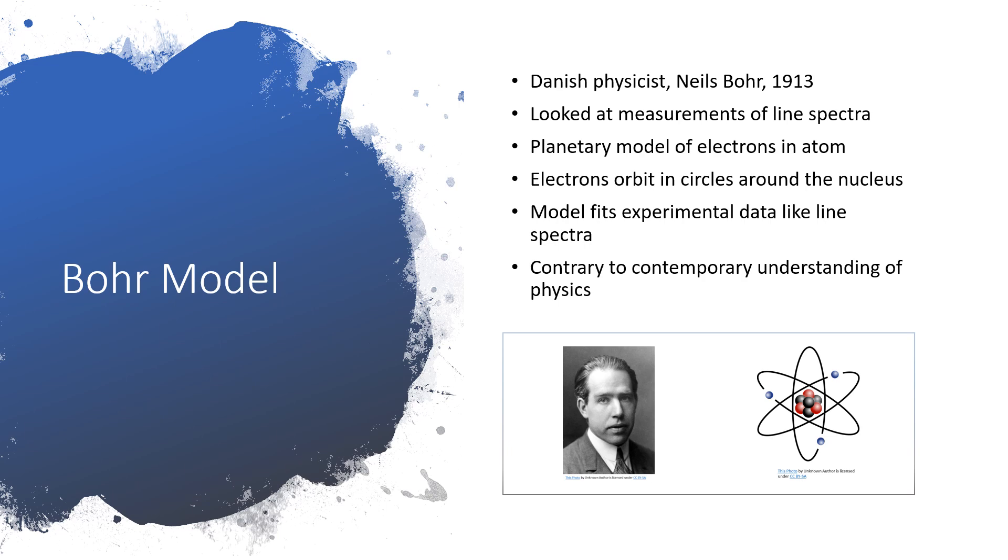So Bohr didn't really have an explanation of why these electron orbits could be stable. He just said, hey, look, if we do have stable orbits, we can match this model of the atom to the experimental spectra that had been observed.